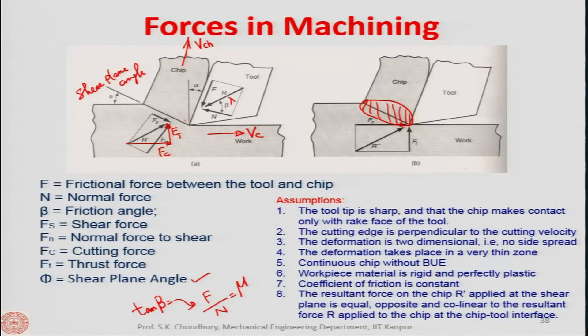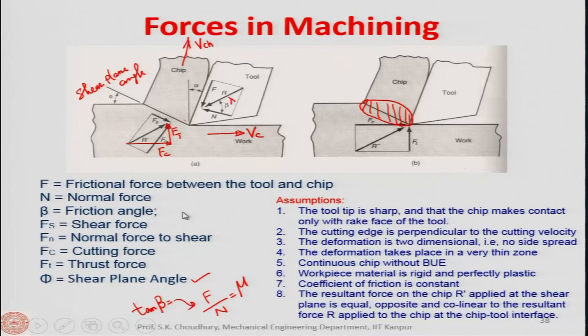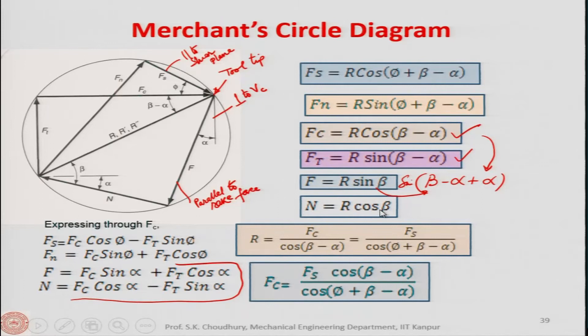Merchant's model is a 2D orthogonal cutting model — not oblique cutting — because all the assumptions are valid only for orthogonal cutting. In oblique cutting these assumptions do not hold. The three key angles are the shear plane angle, rake angle, and friction angle, and all quantities can be converted through Fc and Ft, which are the forces we actually measure.